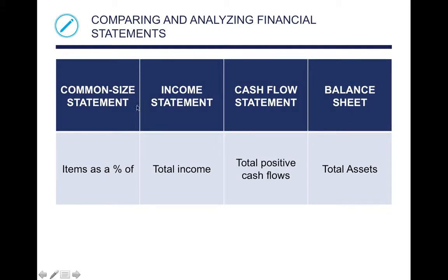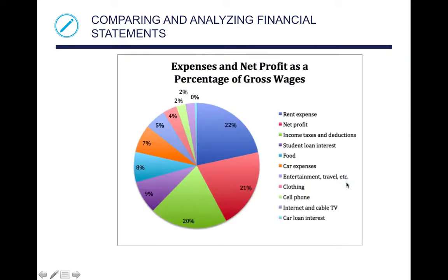Here we have the common size statement alongside the income statement, the cash flow statement, and the balance sheet. On a common size statement you'll see items as a percentage. On the income statement you'll see total income; on the cash flow statement, total positive cash flows; and the balance sheet will show assets. Expenses and net profit are shown as a percentage of gross wages, giving the whole picture of how income is divided. The biggest portions are rent expense, income taxes and deductions, and net profit. Then you have smaller ones like student loan interest, food, car expenses, and so on.